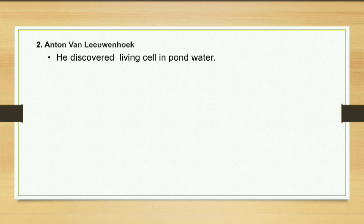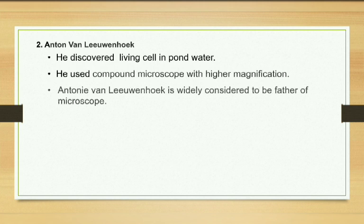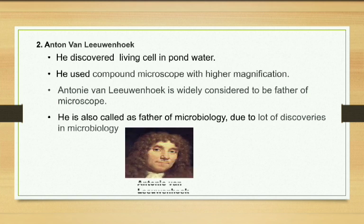The second name in the discovery of cell is Antoni van Leeuwenhoek. He observed a living cell in pond water. He used a compound microscope with high magnification power. At that time, he discovered many microorganisms and cells with the help of this microscope. So he is called the Father of Microscopy. He also contributed to the discovery of many things in microbiology, so he was also called the Father of Microbiology.